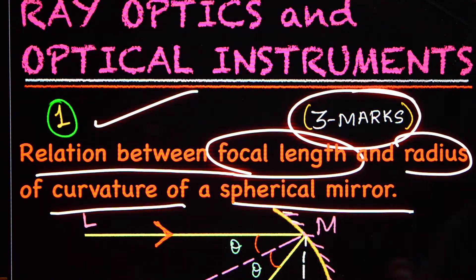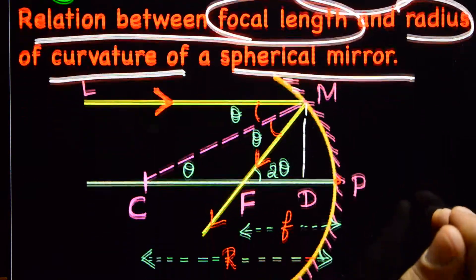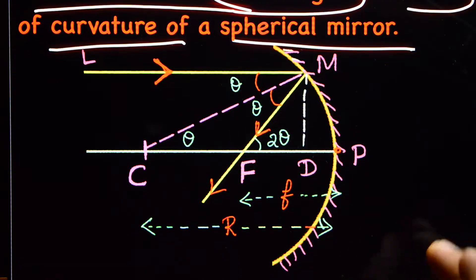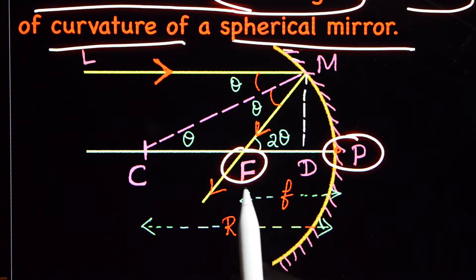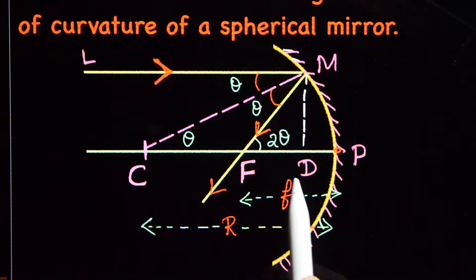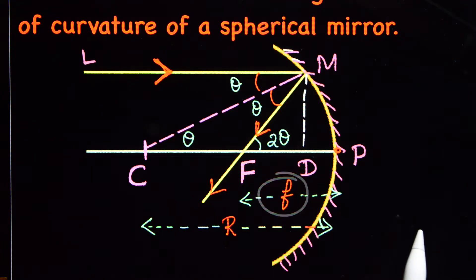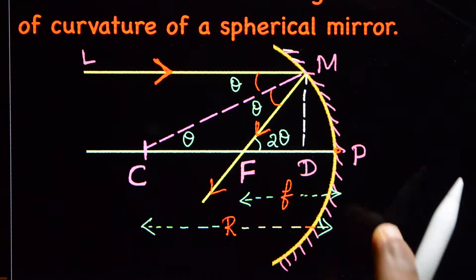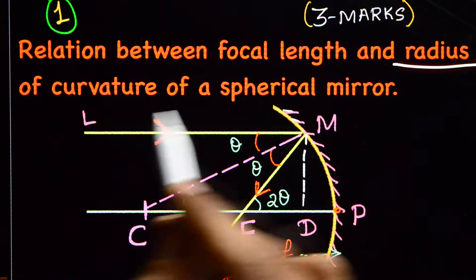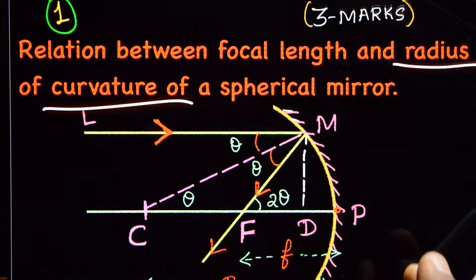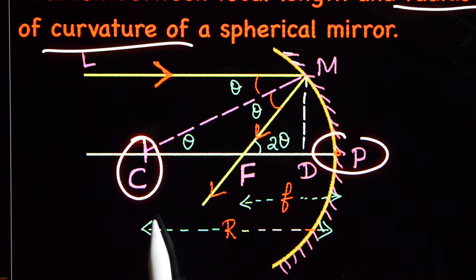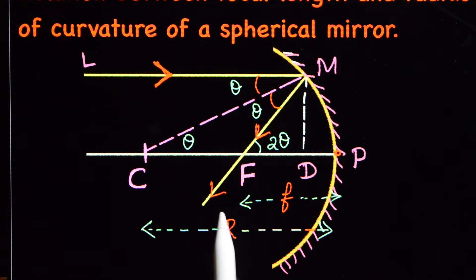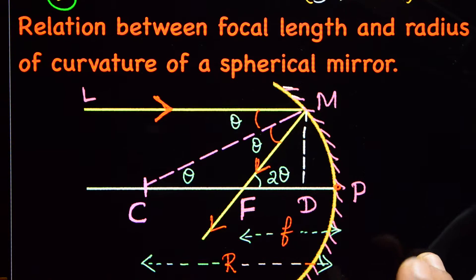What is focal length? Focal length is the distance between the pole and the focus, denoted by small f. What is the radius of curvature? The radius of curvature is the distance between the pole and the center of curvature.